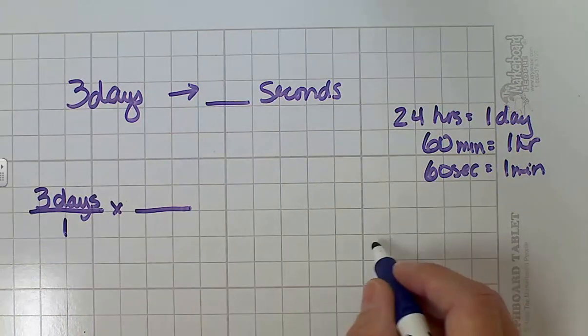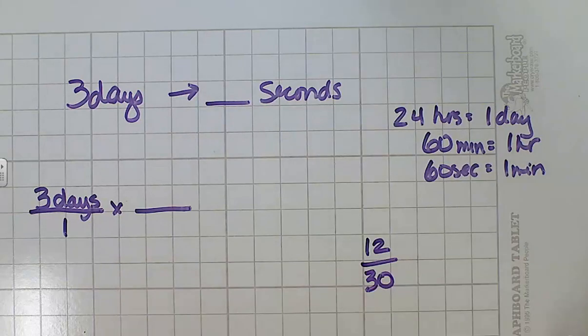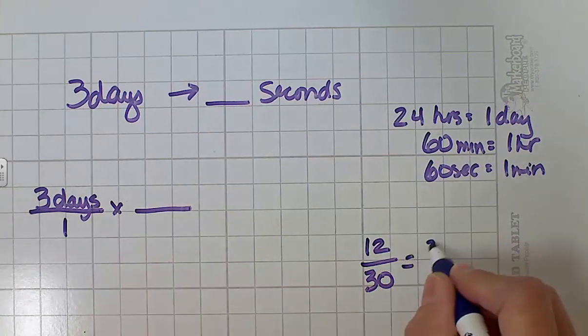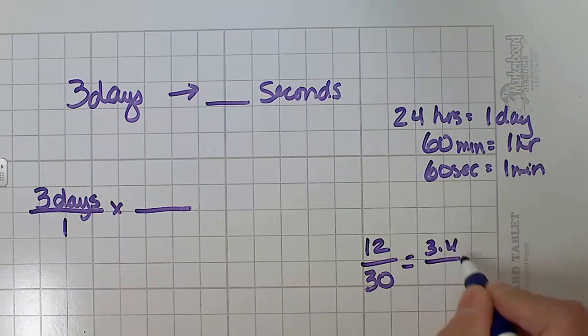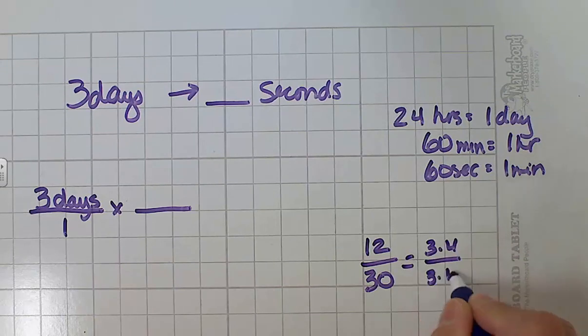Now when we were younger we learned things like 12 thirtieths, and your teacher always said make sure you reduce, lowest terms, make sure you reduce. And you would look at that and you'd say, oh I know, I can take a three out of both halves. What you were really doing is you were saying 12 is 3 times 4, and 30 is 3 times 10. And 3 over 3 as you know is 1. So that's the same thing as 4 over 10.